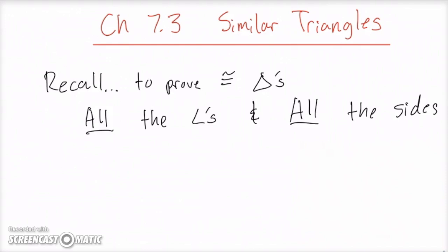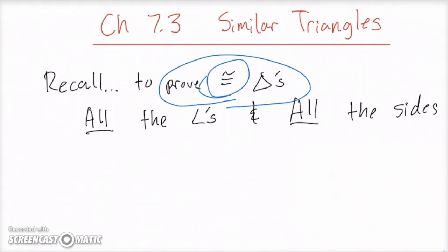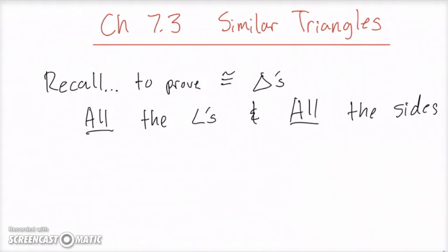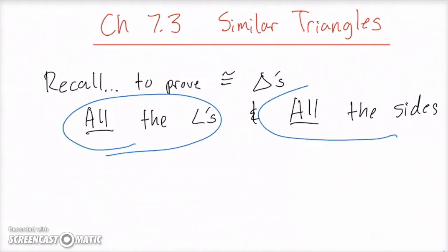Looking right here, chapter 7.3 for similar triangles. I want you guys to recall back on how did we prove congruent triangles — congruent, not similar. Before, we started off by saying in order for shapes to be congruent, all the angles and all the sides had to be congruent in order to show that they're congruent.